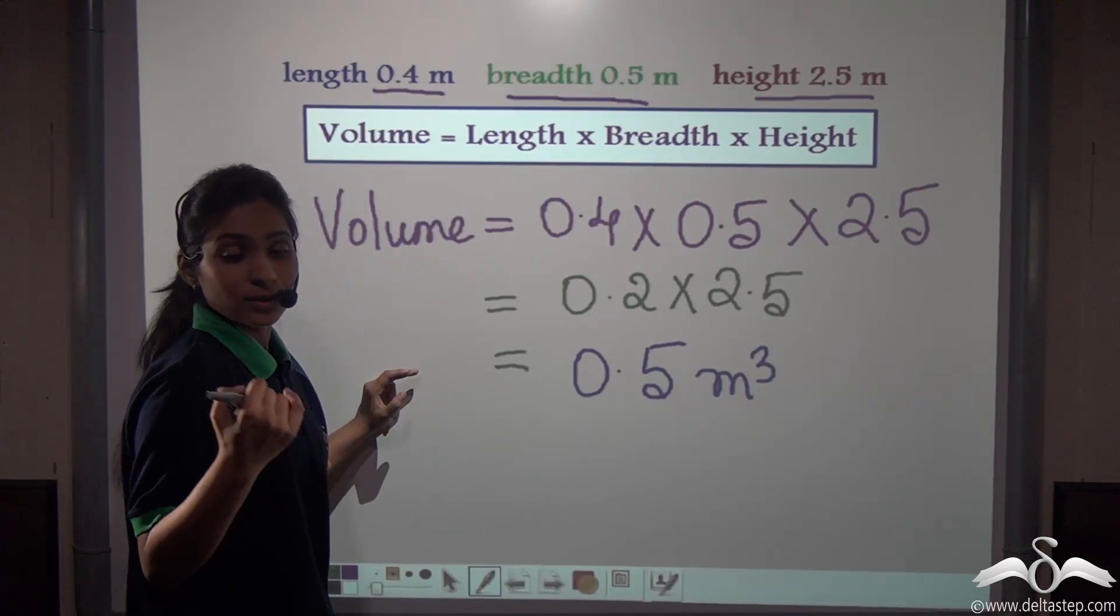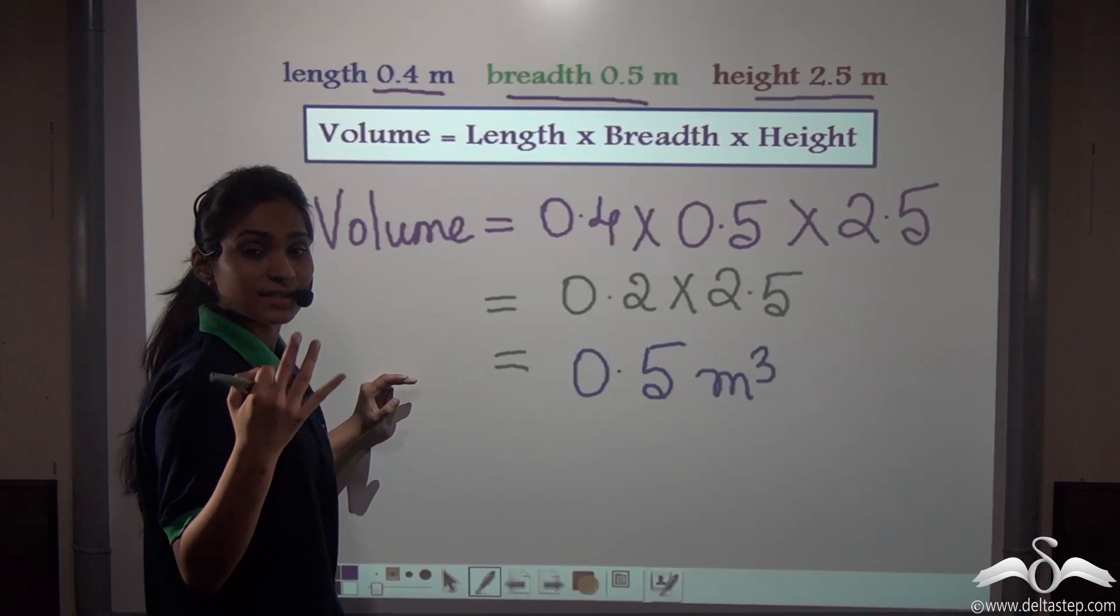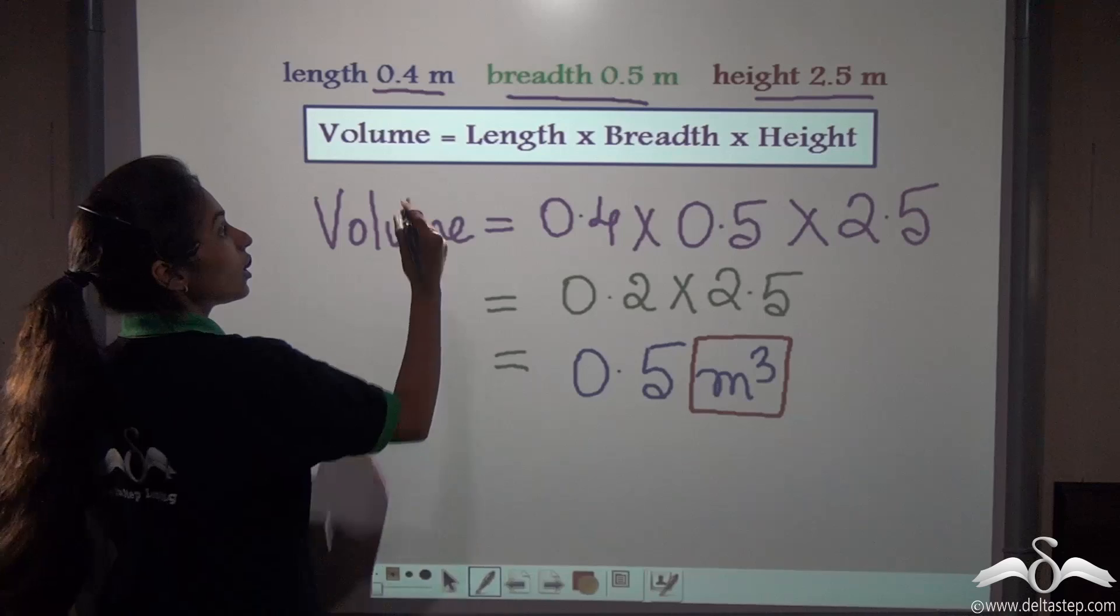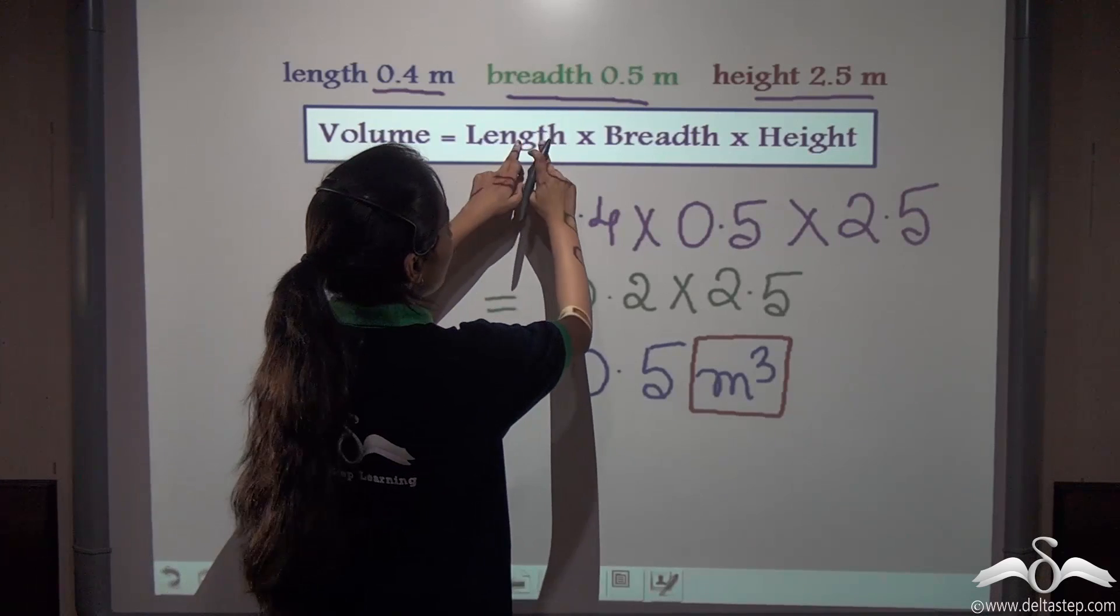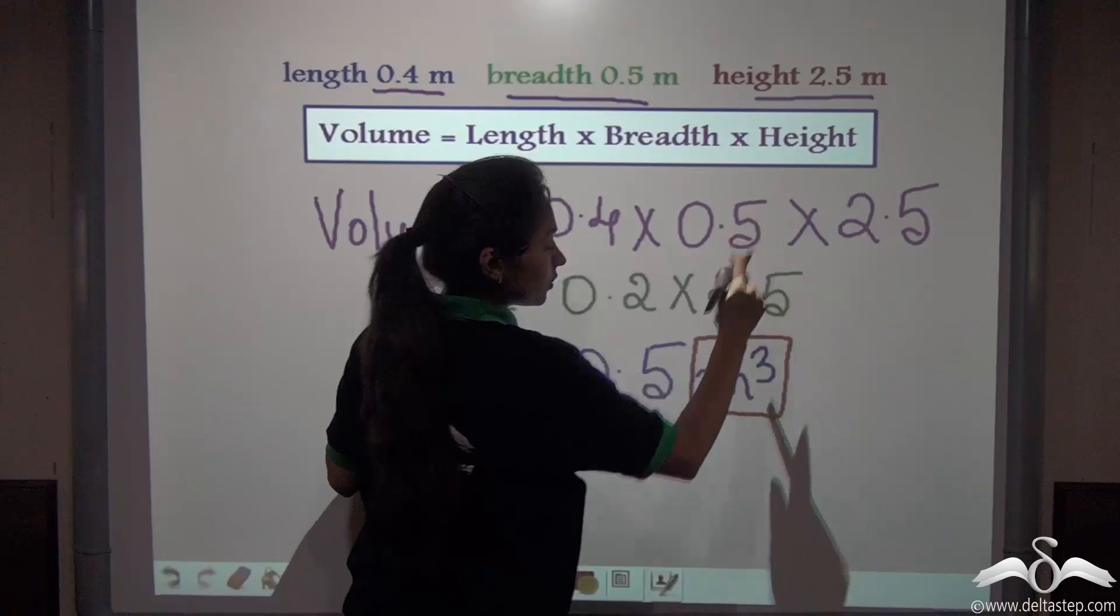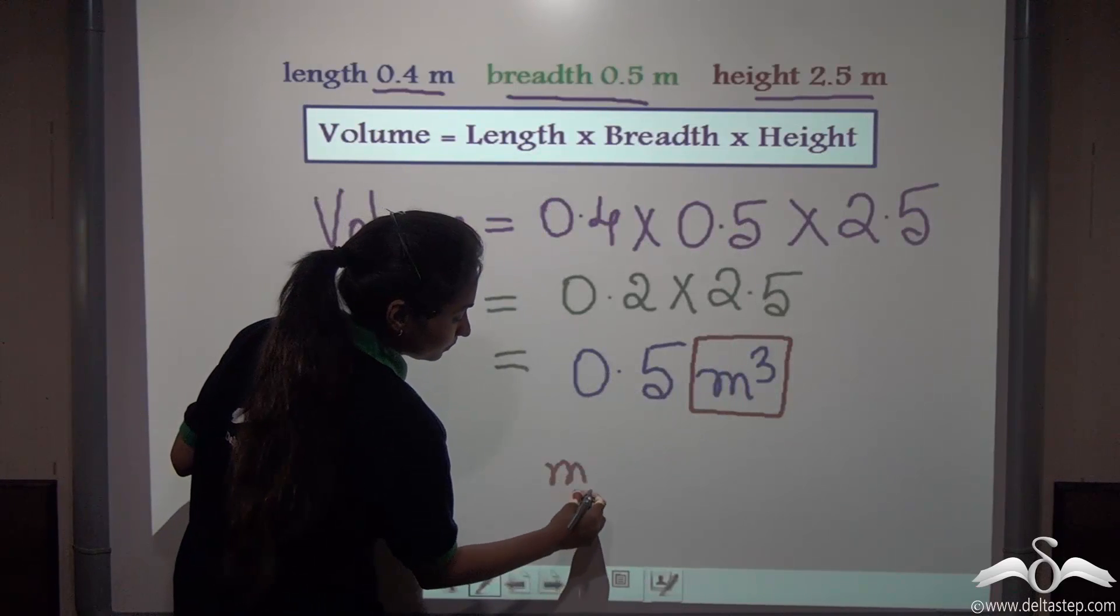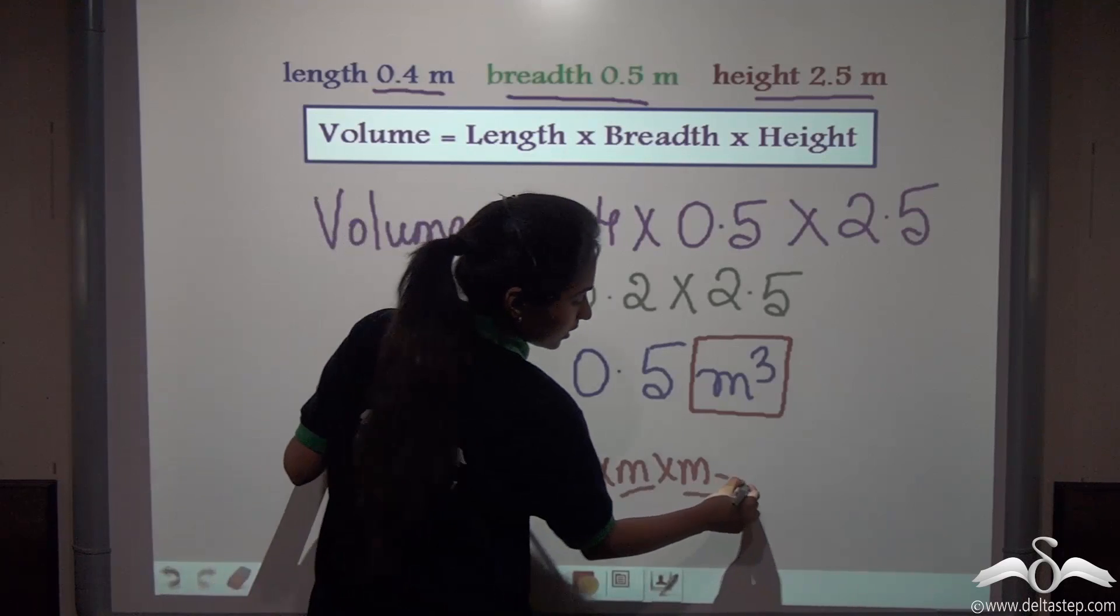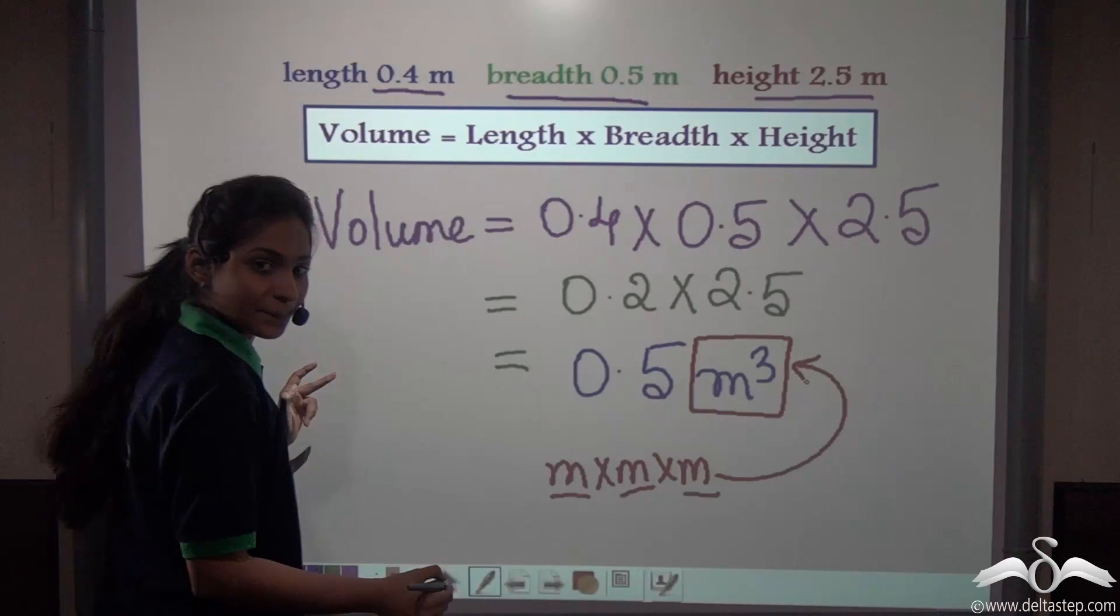Remember that the volume always has the unit cubic metres or cubic centimetres. Why? Here you can see that we are multiplying three units here, so metre into metre into metre gives us—one, two, three—that is why we use cubic metres.